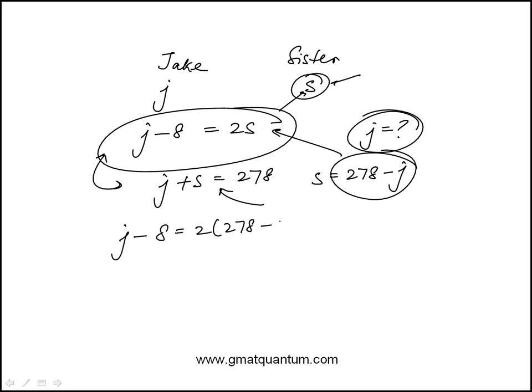Okay, so it's 2 times 278 minus J, and 2 times 278 would be, let me just do the multiplication, 556 minus 2J.